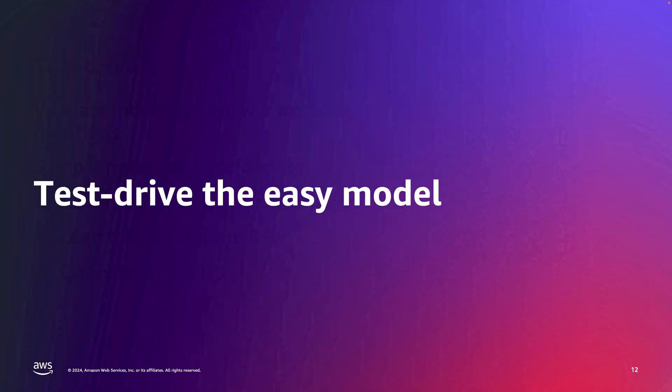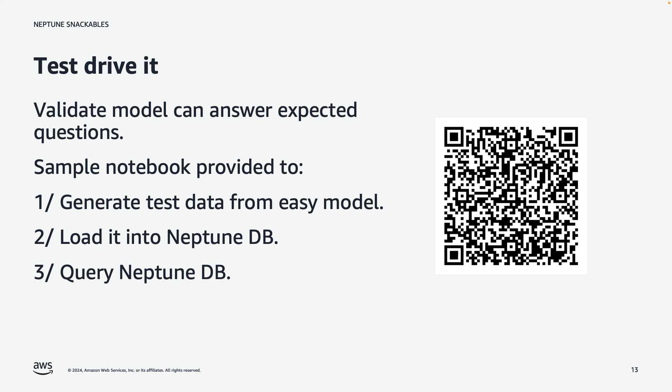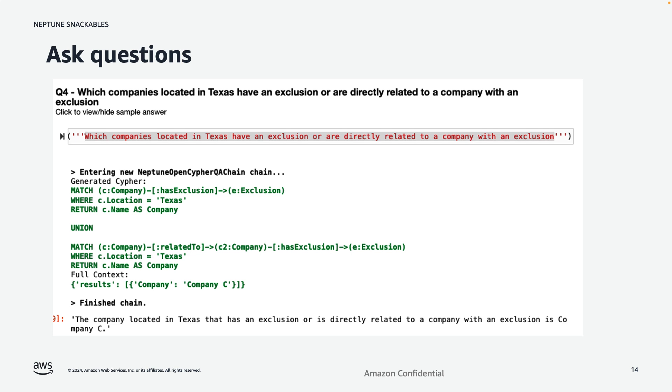Now let's test drive the model to validate it. We want to perform three steps: generate some test data, load that data into a Neptune database, and query it. Significantly, the large language model can help with all three steps. From our model, it can generate plausible test data and even provide OpenCypher CREATE statements, allowing us to transactionally load this data into the Neptune database. It can also help write the queries, and we provide a notebook demonstrating this concept at the link shown. We can ask natural language questions like: which companies located in Texas have an exclusion or are directly related to a company with an exclusion? Behind the scenes, the large language model generates a graph query to answer the question. The company located in Texas is Company C.